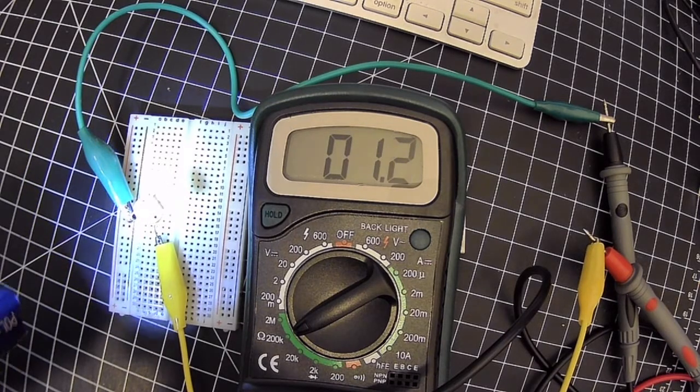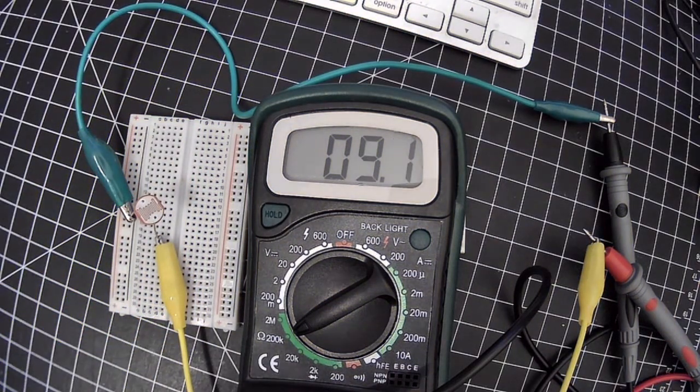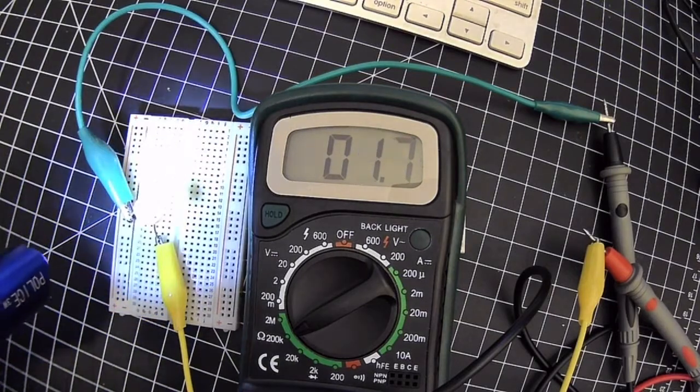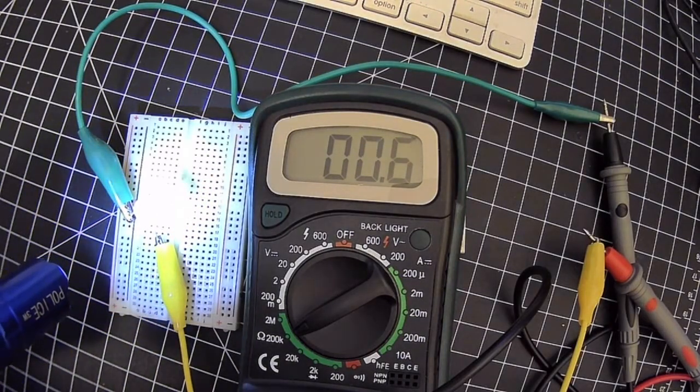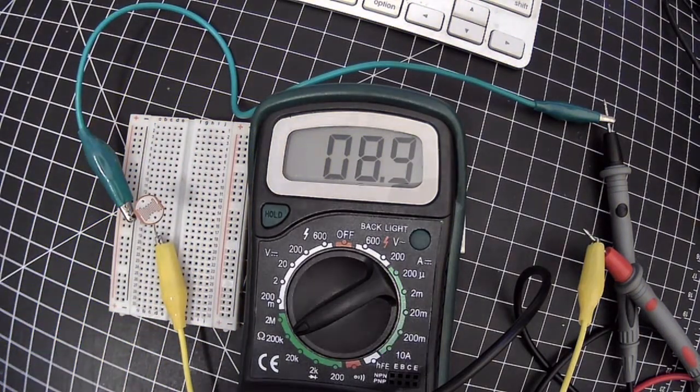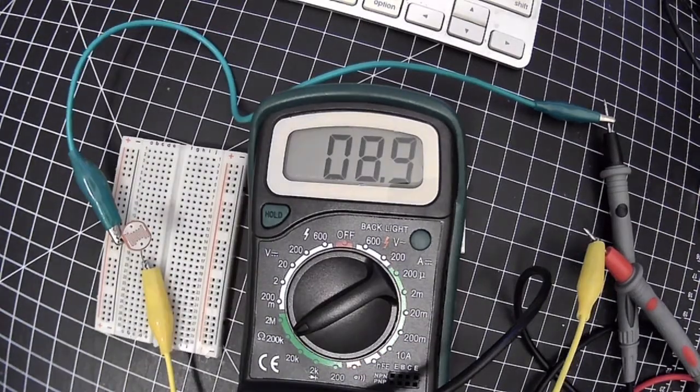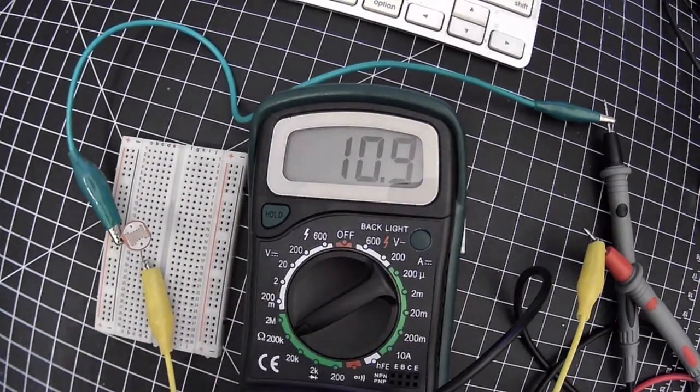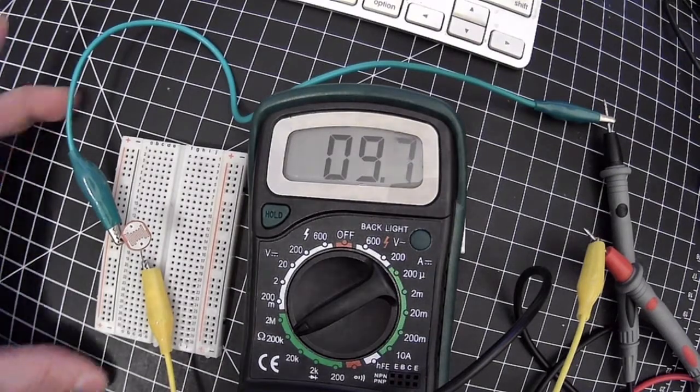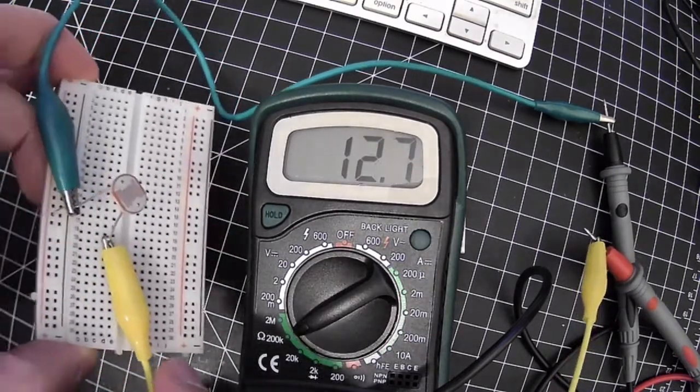We should start by measuring this so we can see the range of our CDS cell. You might have a couple in your kit and so please measure both of them and measure them in light and in shadow and see what is the highest amount of resistance. That's when you can make it as dark as possible. And what's the lowest amount of resistance you can measure in ohms on your meter.